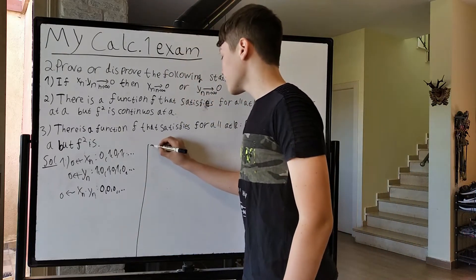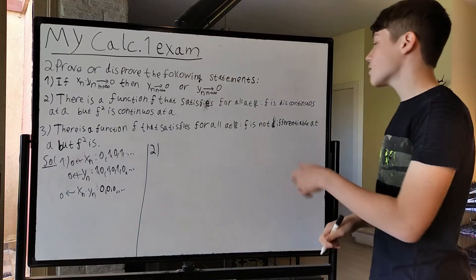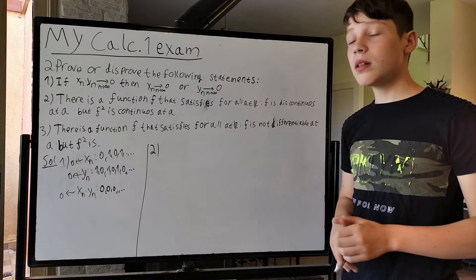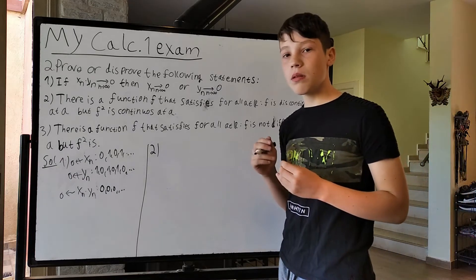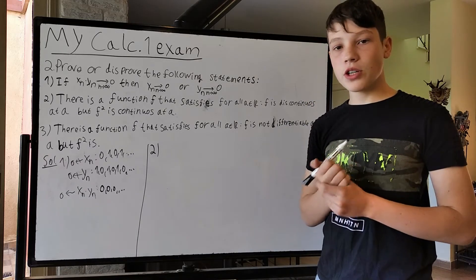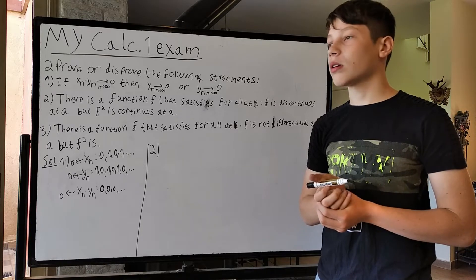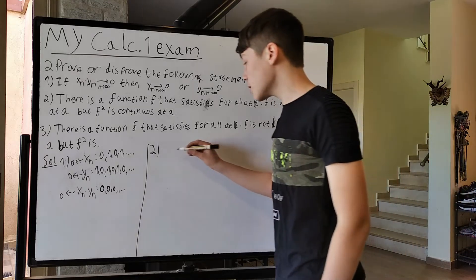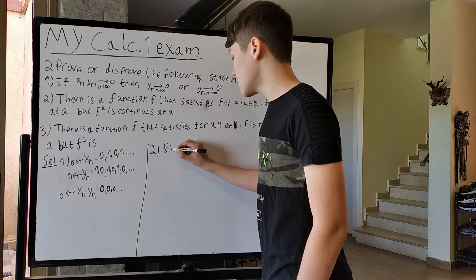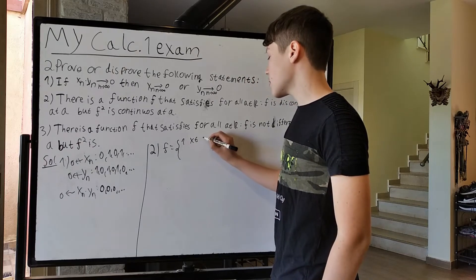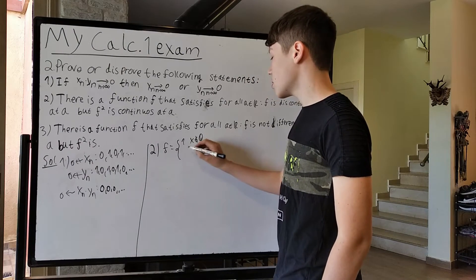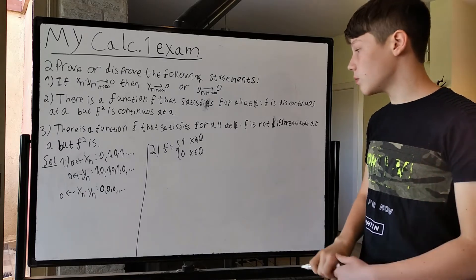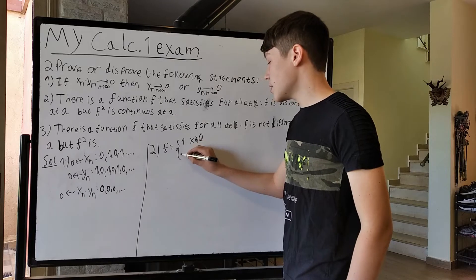Now let's do number two. There is a function f that satisfies: for all real a, f is discontinuous at a but f² is continuous at a. There is a famous function that can serve as an example — it's called the Dirichlet function. It is: 1 if x is irrational, and negative 1 if x is rational.